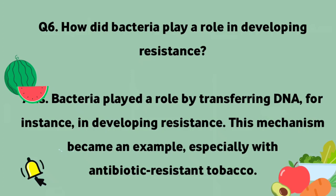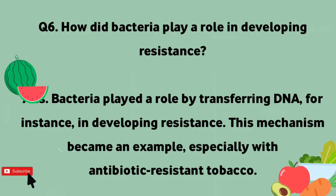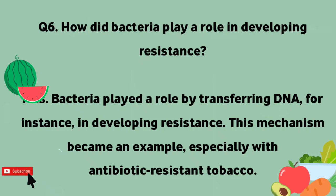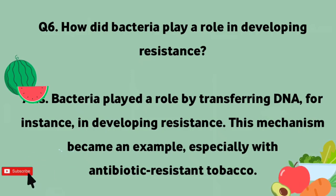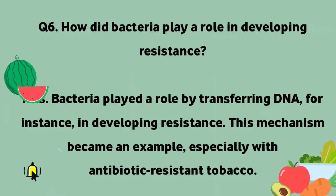How did bacteria play a role in developing resistance? Bacteria played a role by transferring DNA — for instance, in developing resistance. This mechanism became an example, especially with antibiotic-resistant tobacco.